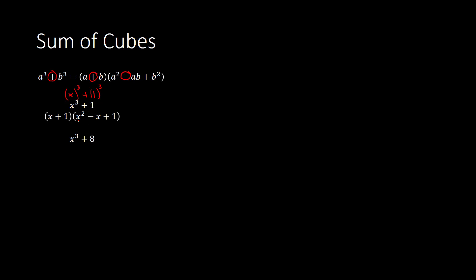Here we have an x being cubed, and then we have a 2 being cubed — 8 is 2 to the third power. Anywhere I see an a, I put an x. Anywhere I see a b, I put a 2. So instead of a plus b, I have x plus 2. Instead of a squared, I have x squared. Instead of a times b, I have x times 2, which is 2x. Instead of b squared, I have 2 squared, which is 4.